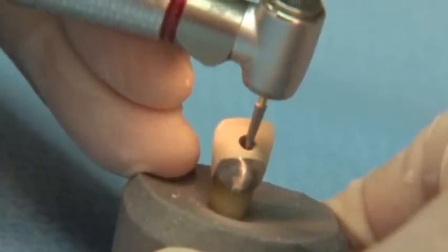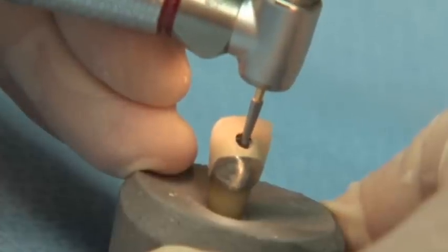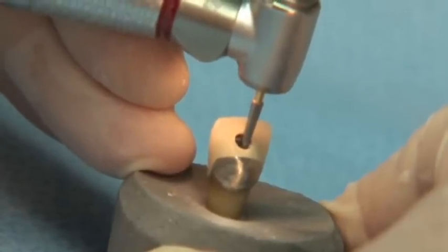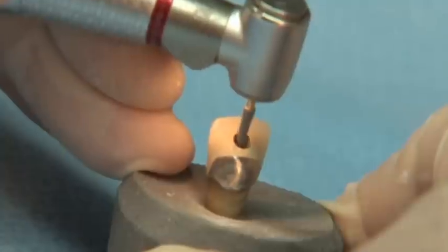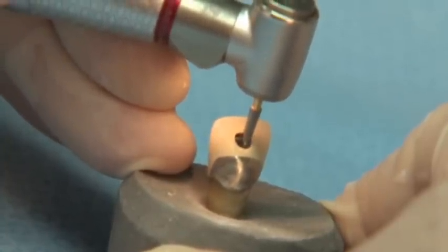The Safe End tip will prohibit the access from getting deeper, but will allow for lateral expansion. EndoSafe end has no step at the tip. This burr will prevent ledging of the axial walls and the RoundSafe end prevents perforation of the furcation areas.